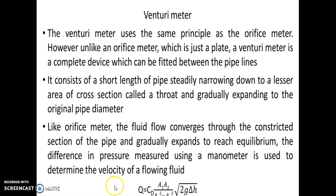The same formula is used for the orifice meter, but the CD value will be different. The CD value for a venturi meter is 0.97, but CD value for an orifice meter is 0.65. The CD value will be different for different instruments.